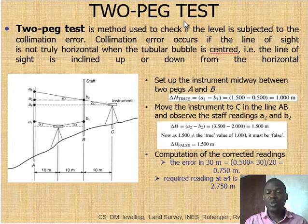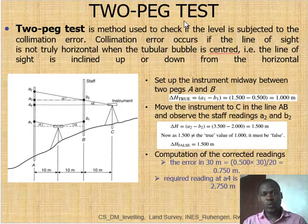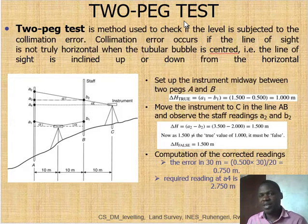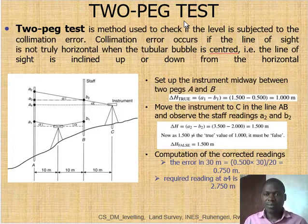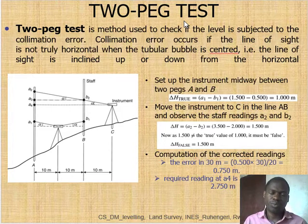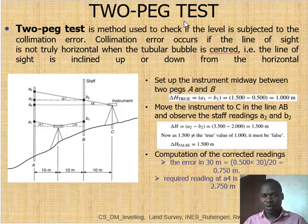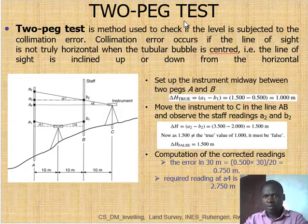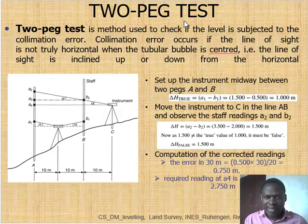Dear students, what did we call the 2PEC Test? Usually you use the level but you don't check if it has the collimation error. The 2PEC Test is a method used to check if the level is not subjected to the collimation error — meaning that the line of sight is not inclined up or down. For that, you are going to proceed as follows.